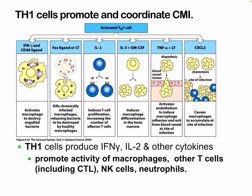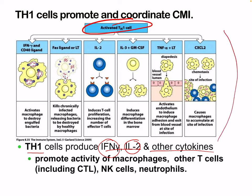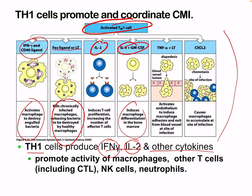Th1 cells promote and coordinate cell-mediated immunity. Key mediators are interferon gamma, IL-2, and other cytokines. They promote activity in macrophages, other T cells including CTLs, NK cells, and neutrophils. They produce interferon gamma and CD40 ligand to activate macrophages and destroy engulfed bacteria, produce Fas ligand and lymphotoxin to kill chronically infected macrophages, IL-2 to induce T cell proliferation, IL-3 and GM-CSF to induce macrophage differentiation in the bone marrow, and TNF-alpha and chemokine CCL2.